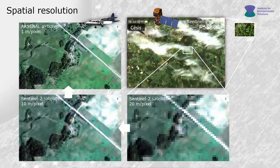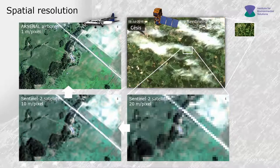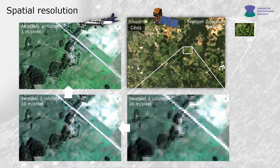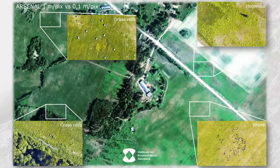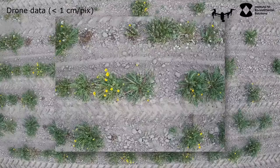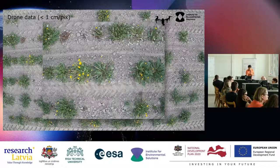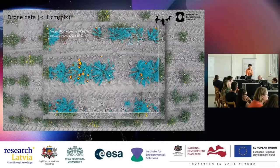If you want higher resolution like one meter or below, you need commercial satellite data or airborne platforms. For comparison, one-meter data and 0.1-meter data allow you to distinguish very different kinds of objects. For really high resolution, it is a matter of drones — you can get pixel resolution below one centimeter, even millimeter-level, allowing you to count individual flowers and separate plants, not from space but from the air.